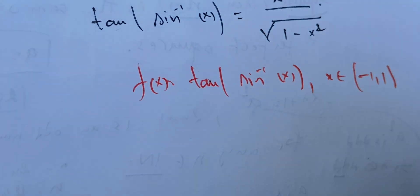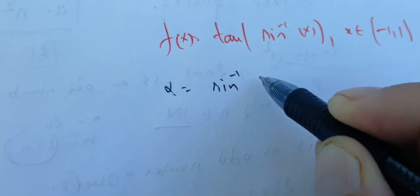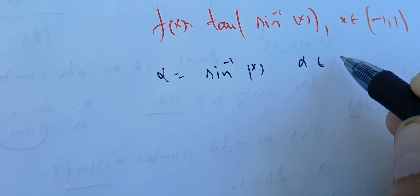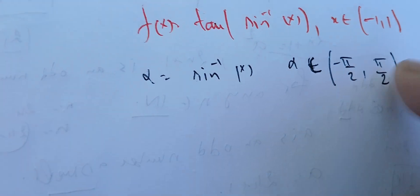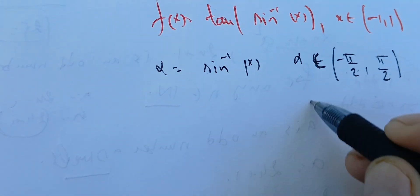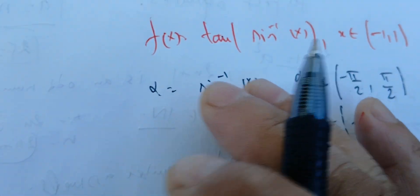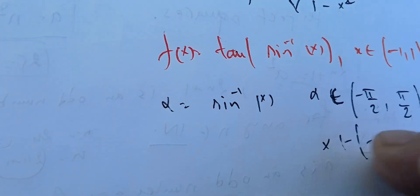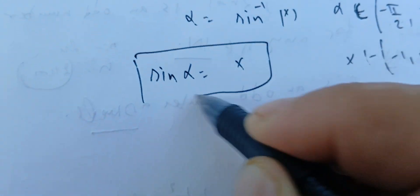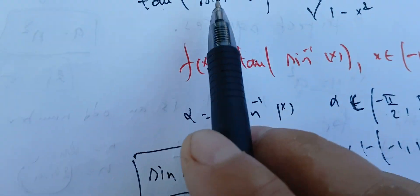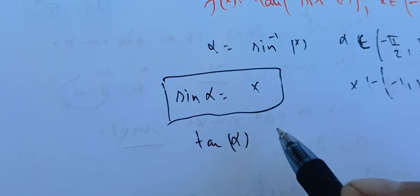To simplify this, we'll use algebra. Let α = arcsin(x), so α is in the interval (−π/2, π/2), not including the endpoints, and x is in (−1, 1). Since sine and arc sine are inverses of each other on this interval, we have sin(α) = x. So we want to find the tangent of α.